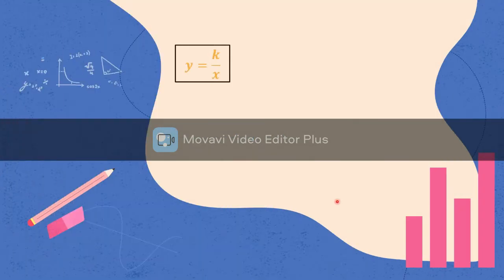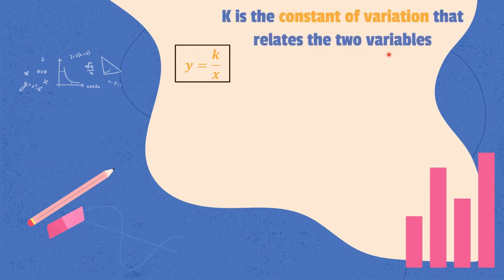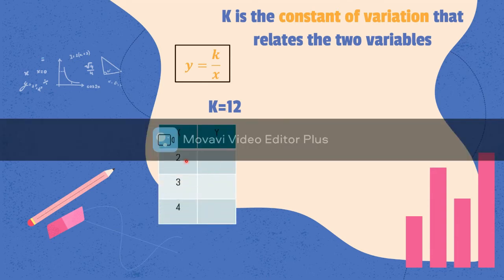Now, what is k? We call this the constant of variation that relates the two variables. Now, let's use k as the constant of variation equal to 12. And then, we have values of x, which are 2, 3, and 4. We'll use k and the values of x to get the values of y.